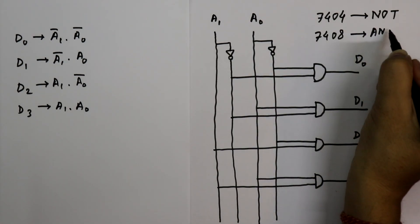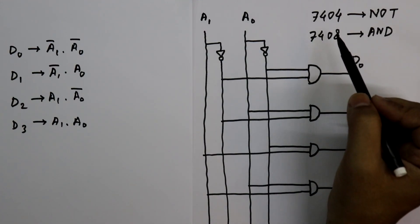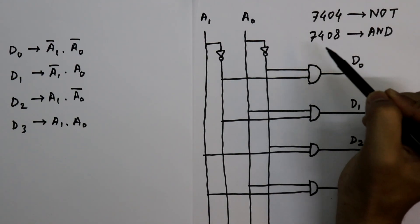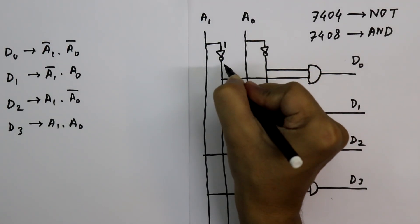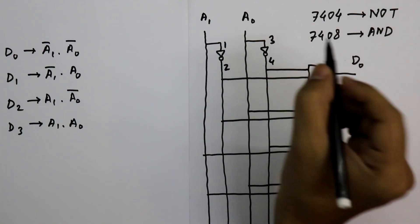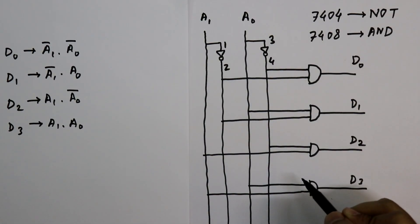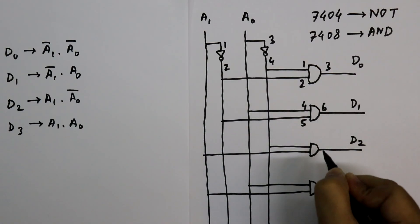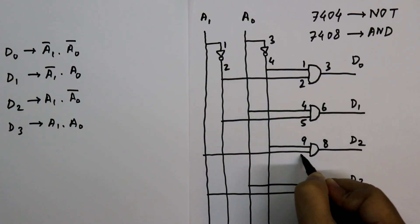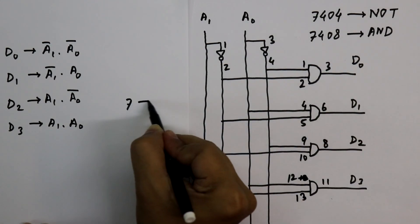I have already explained the pin diagrams for both ICs — the link is in the description below. I am just writing the pin numbers for all the gates. For the NOT gates the pin numbers are 1, 2, 3, and 4. For the four AND gates the pin numbers are 1, 2, 3, 4, 5, 6, 8, 9, 10, 11, 12, and 13. For both ICs, pin 7 should be connected to ground and pin 14 to +5V.